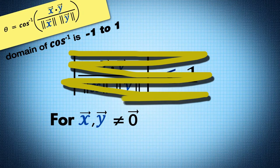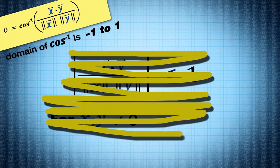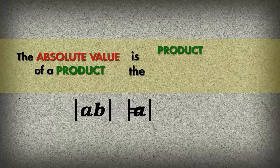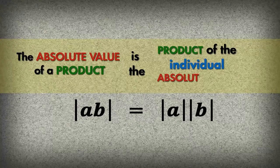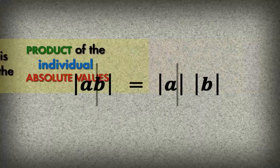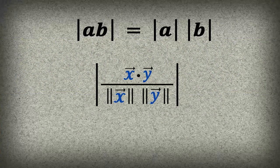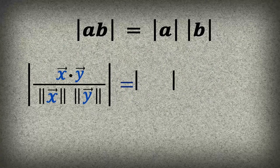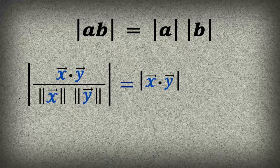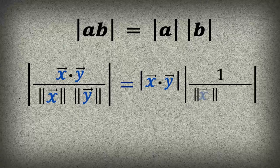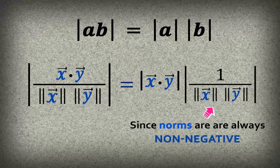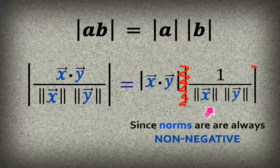First, let's rewrite the statement in a more convenient form. Recall that the absolute value of a product is the product of the individual absolute values. Because of this, we can rewrite the left hand side as the product of the absolute value of x dot y and the absolute value of 1 over the norms. Since norms are always non-negative, we can drop the absolute value.